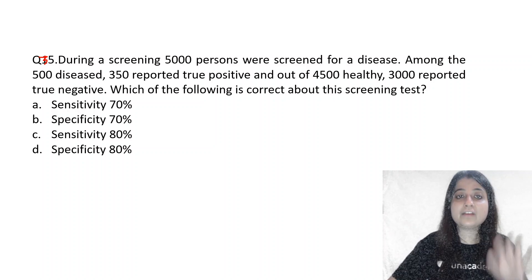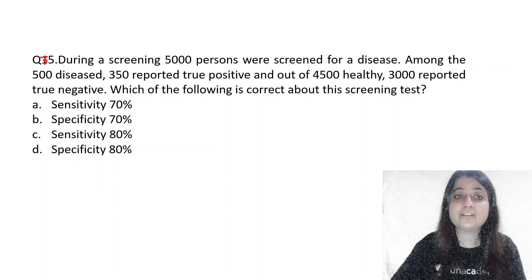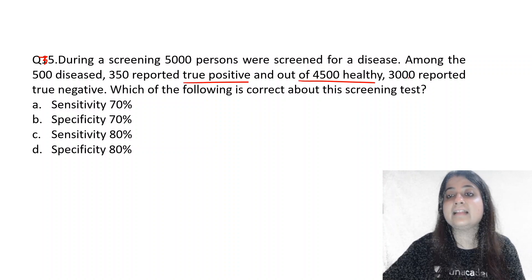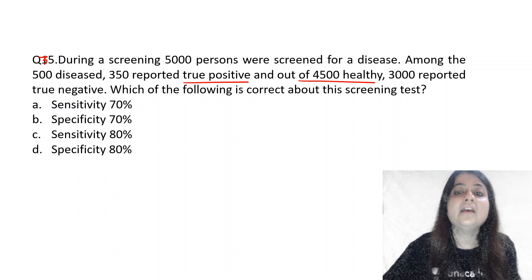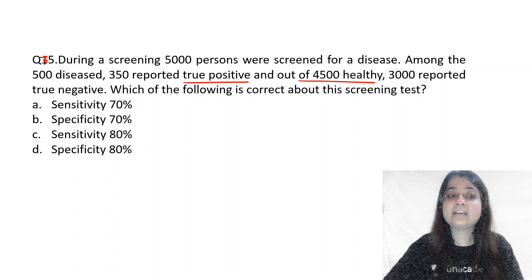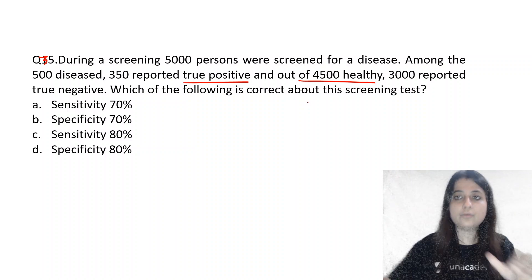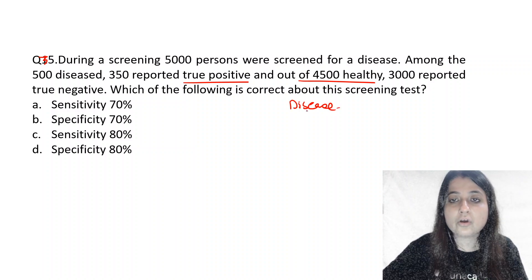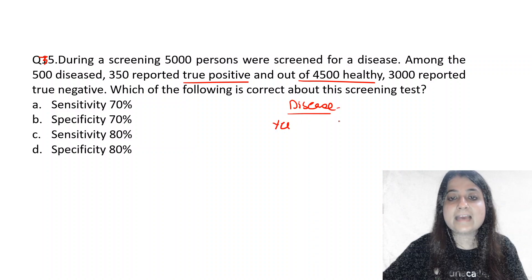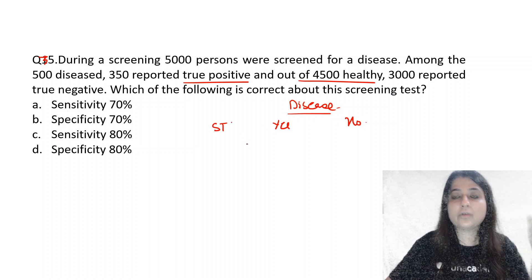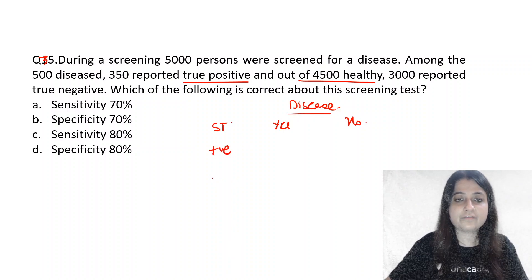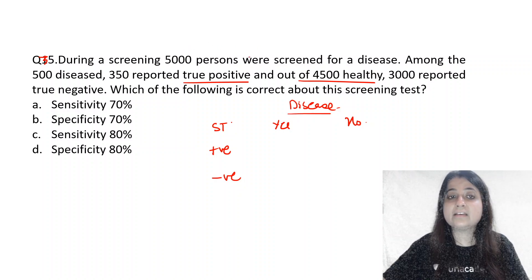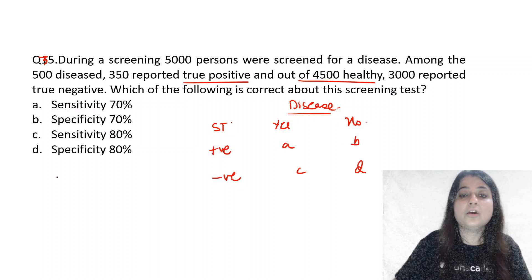During a screening, 500,000 persons were screened for a disease. Among the 500 diseased, 350 reported true positive, and out of 4500 healthy, 3000 reported true negative. When solving a screening test question, disease goes on the column side — disease yes, disease no — and the screening test goes on the row side — positive and negative. The cells are A (TP), B (FP), C (FN), D (TN).